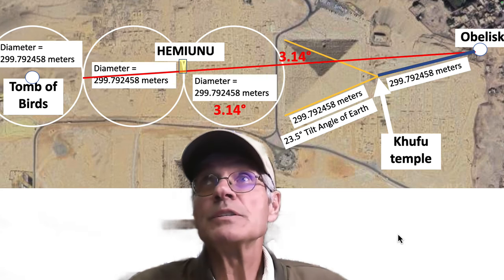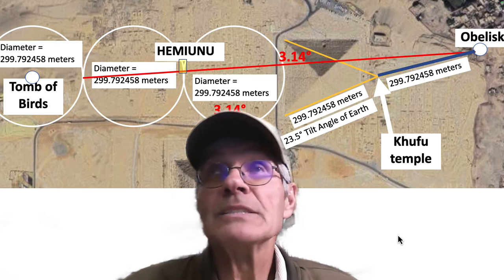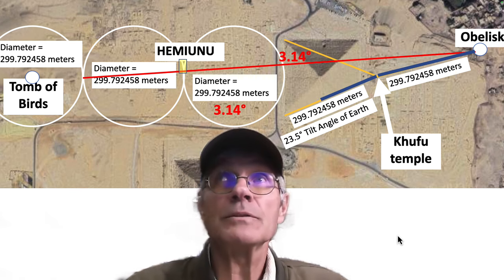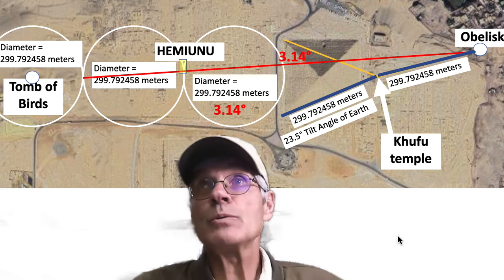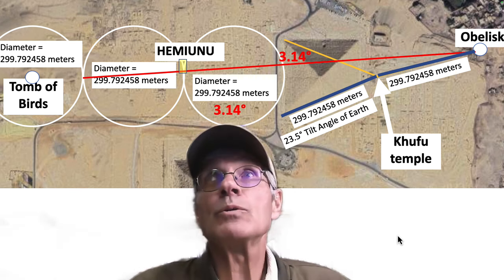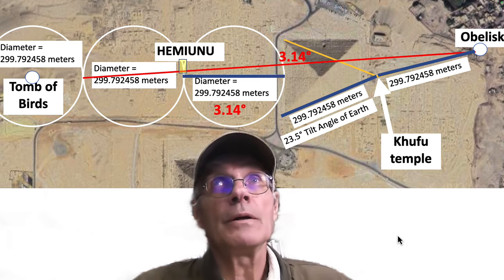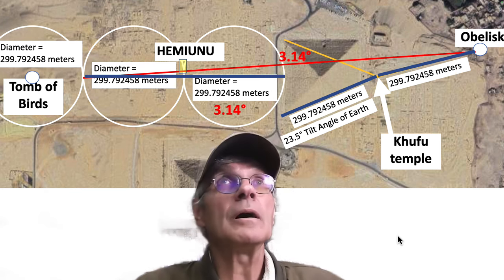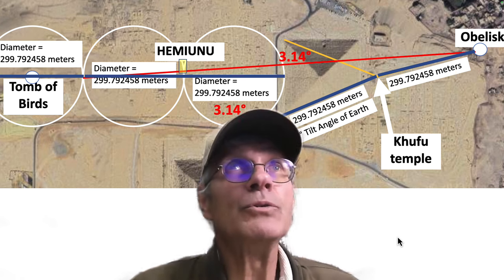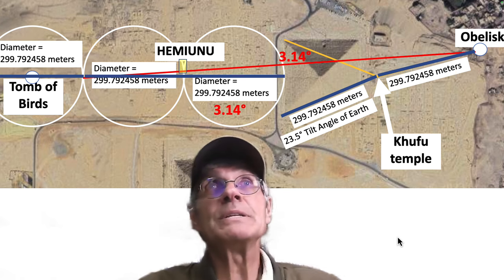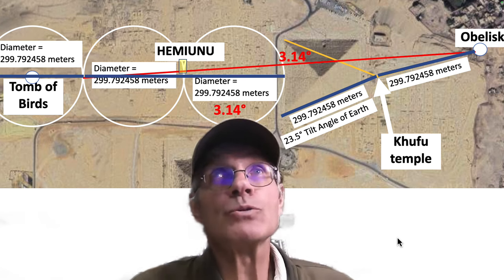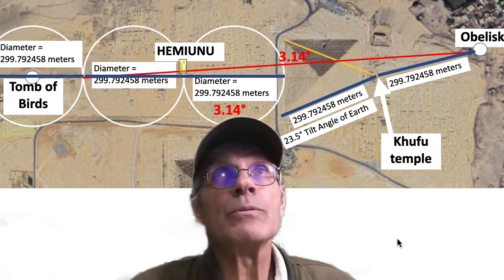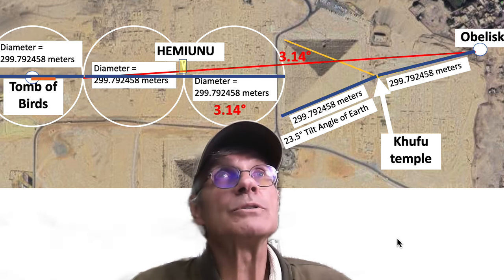I've shown in the last few videos that the speed of light is all over this part of the Giza Plateau — from the obelisk, to the beginning of the Mortuary Temple, to the southwest corner of Khufu. The three circles that go to the west of this tomb all have 299,792, the speed of light in meters, one millionth of the speed of light, and that goes right through the Tomb of the Birds, the south part of Hemiya's tomb.